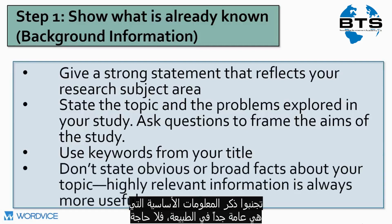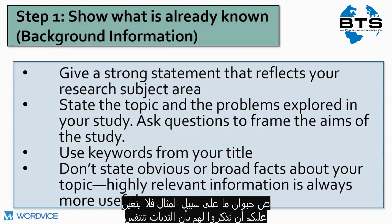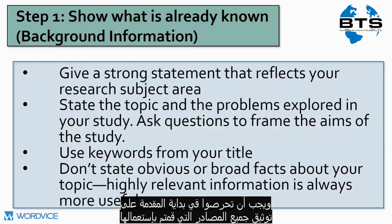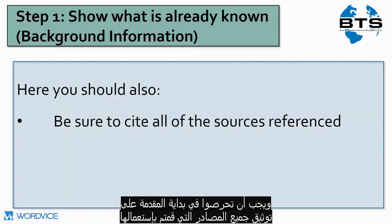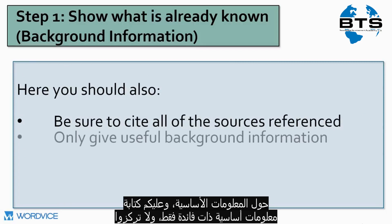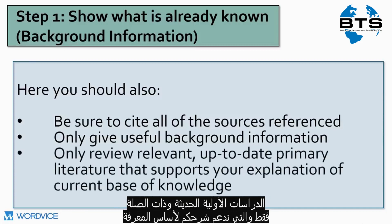Avoid stating background information that is too broad in nature. You don't need to state too many obvious facts that your readers would already know. If you are writing about bottlenose dolphins, for instance, you probably don't need to explain to them that mammals breathe oxygen. At the beginning of the introduction, be sure to cite all of the sources you use for background information and support. Only provide the necessary background information — use it to set up the context for doing the study, and review only relevant, up-to-date primary literature.